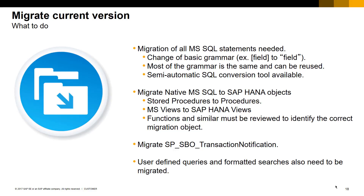Migration will consist of changing the basic grammar from Microsoft Transact SQL to SQL Script. Most of the grammar is similar and can be reused, and there is also a semi-automatic tool that can assist with converting from Microsoft Transact SQL to SQL Script. Any native Microsoft SQL objects will need to be migrated to SAP HANA objects, such as stored procedures to SAP HANA procedures, Microsoft views to SAP HANA views, and any functions need to be reviewed to identify and correct any SQL. If we have altered the SPO transaction notification in our company databases, we will also need to review that SQL to verify if changes are required. Any user-defined queries and formatted searches in SAP Business One will also need to be reviewed.